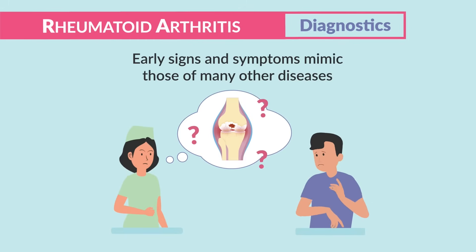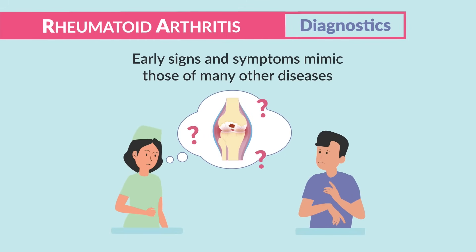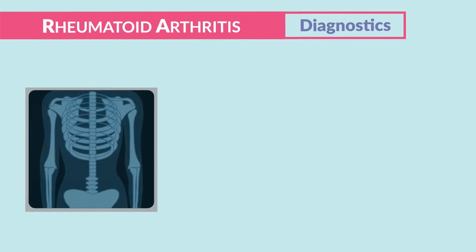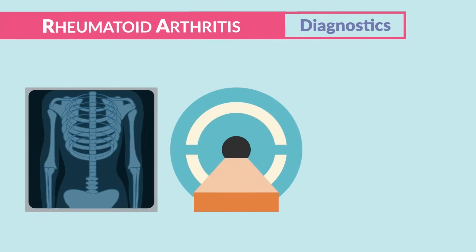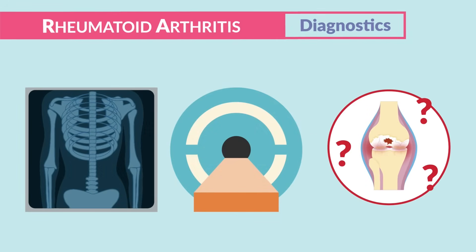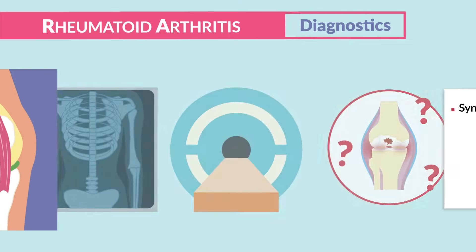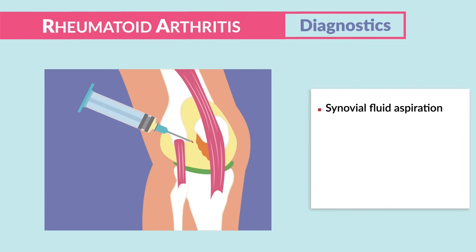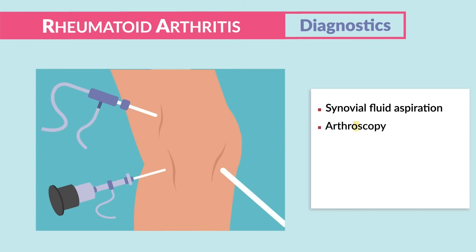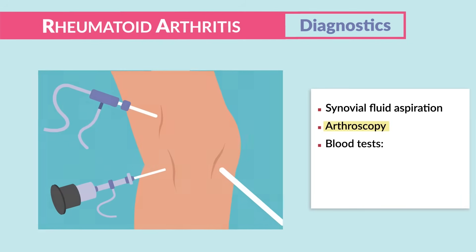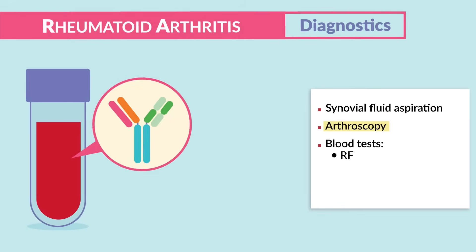RA can be very difficult to diagnose since early signs and symptoms mimic many other diseases. Imaging like x-rays and MRIs are typically used, but it's hard to diagnose in early stages. A synovial fluid aspiration takes fluid out of the joint for testing, and arthroscopies provide direct visualization of the joint cavity with samples taken as well.